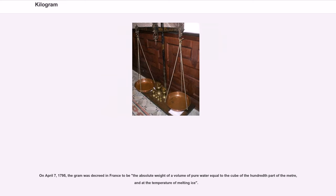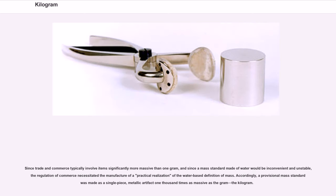On April 7, 1795, the gram was decreed in France to be the absolute weight of a volume of pure water equal to the cube of the hundredth part of the meter, at the temperature of melting ice. Since trade and commerce typically involve items more massive than one gram, and since a mass standard made of water would be inconvenient and unstable, the regulation of commerce necessitated the manufacture of a practical realization of the water-based definition of mass — a metallic artifact 1,000 times as massive as the gram, the kilogram.